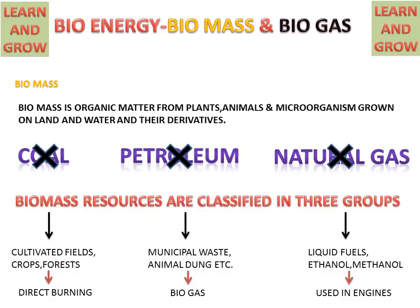Cultivated fields, crops or forests can be used for direct burning. Municipal waste and animal dung etc. is used for producing biogas. And liquid fuels, ethanol and methanol are used in engines for driving engines. So these are the categories of biomass.